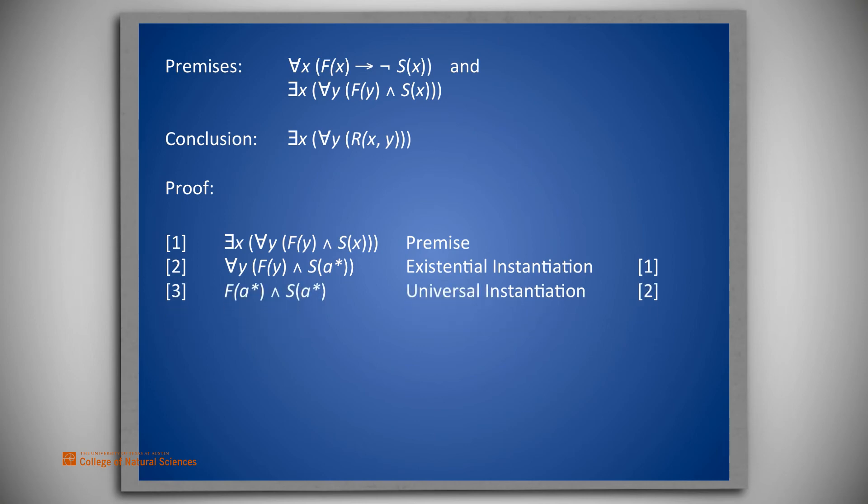On line 3, we universally instantiate line 2 with y being replaced by the same a star. This results in f of a star and s of a star. Now,